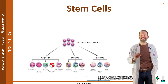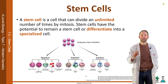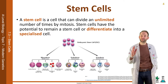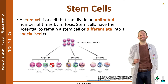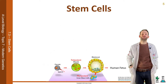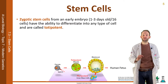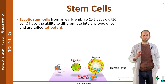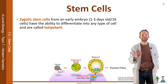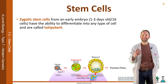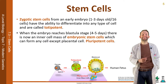To be more specific, a stem cell is a cell that can divide an unlimited number of times by mitosis. Stem cells have the potential to remain a stem cell or differentiate into a specialised cell. Zygotic stem cells from an early embryo, about one to three days old, where there are about 16 cells — they have the ability to differentiate into any type of cell, and we call this a totipotent stem cell.